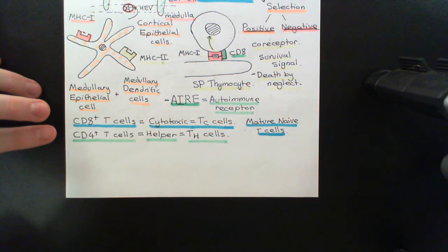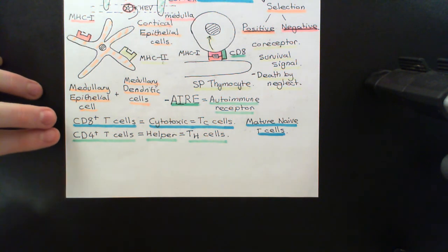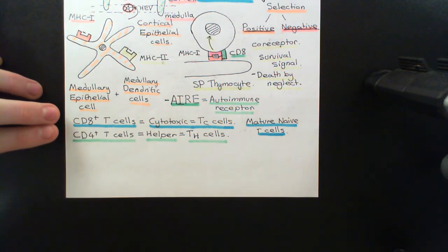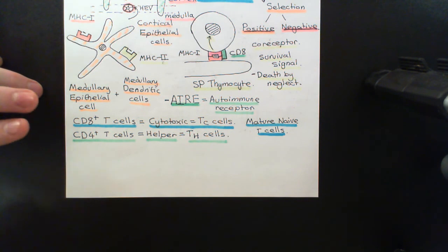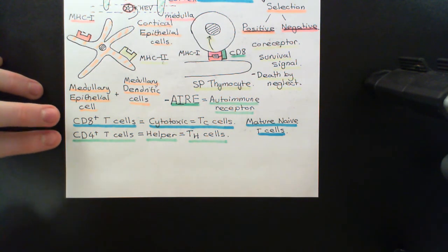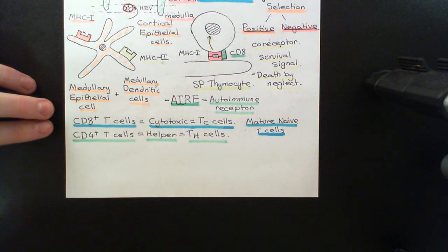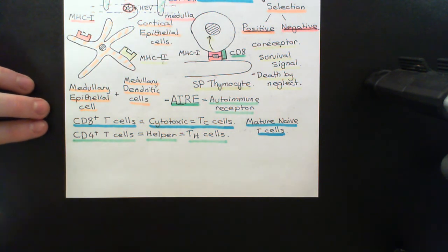We're putting these mature, naive T-cells into the bloodstream. Remember, they're all going to have different T-cell receptors, and none of them should have a T-cell receptor that is going to recognize a self-peptide fragment presented on either MHC class 1 or MHC class 2. We should have got rid of all of those. So the only mature, naive T-cells being put into the bloodstream should have a T-cell receptor that isn't capable of being activated by an MHC complex with a self-peptide fragment. If it can be activated by anything, it should only be an MHC complex with a non-self or pathogenic antigen fragment.